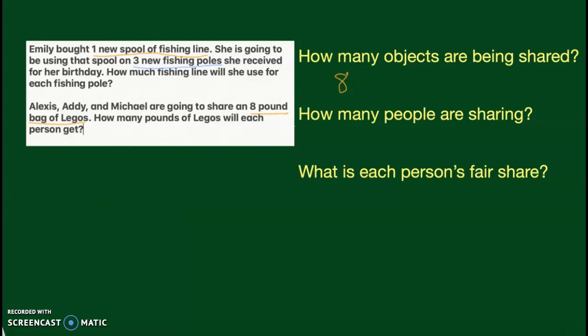How many people are sharing? In this problem, they're not numbered, but we have Alexis, we have Addy, and we have Michael. So that shows us there are three people sharing.